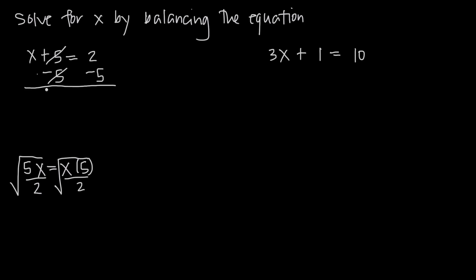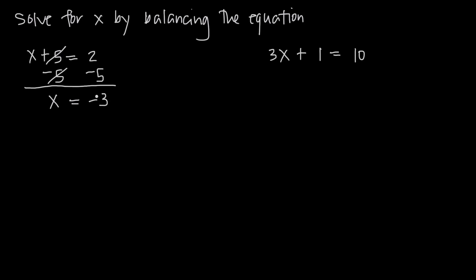We're just left with x over here on the left hand side by itself, like we wanted. And on the right hand side, we have 2 plus a negative 5, or just 2 minus 5. 2 minus 5 gives us negative 3. So we can see that x is equal to negative 3.